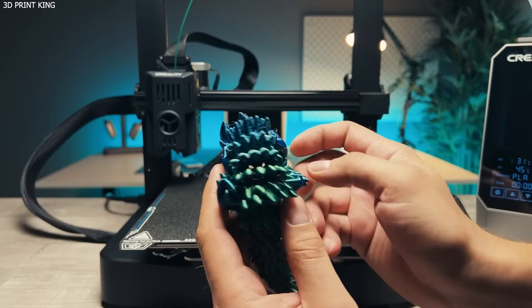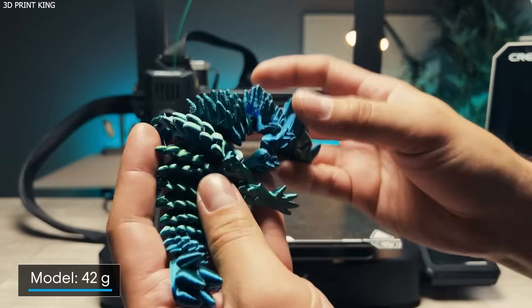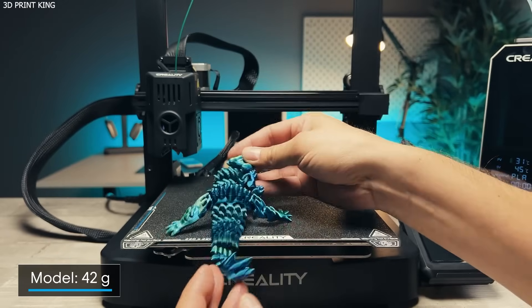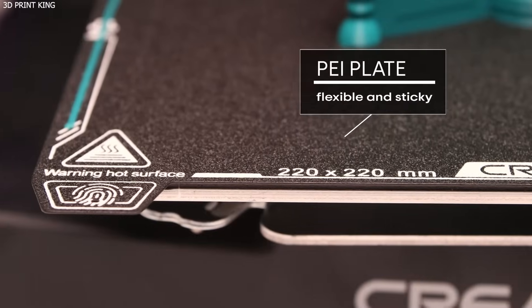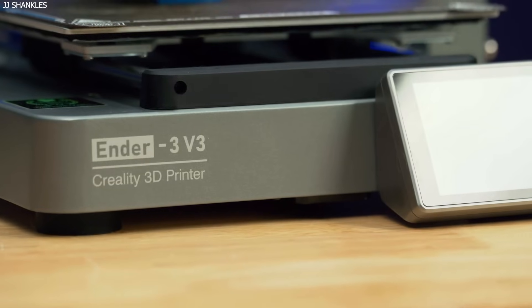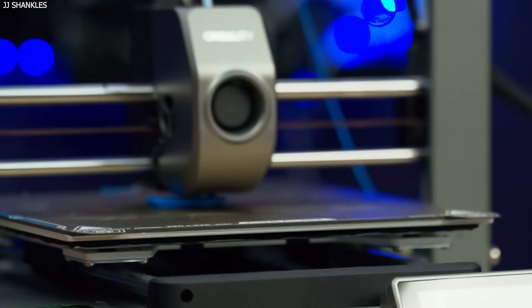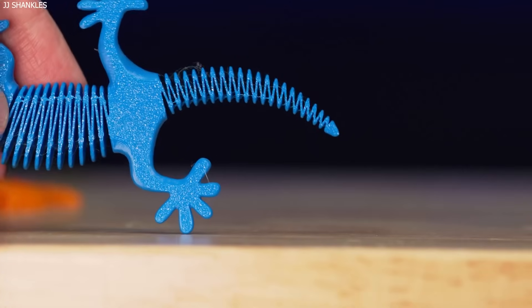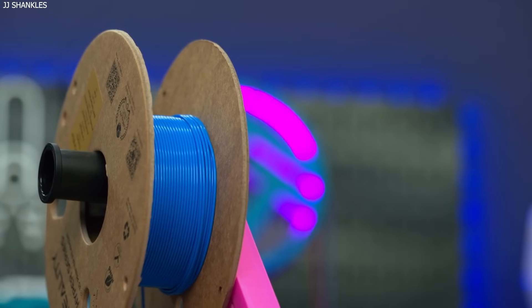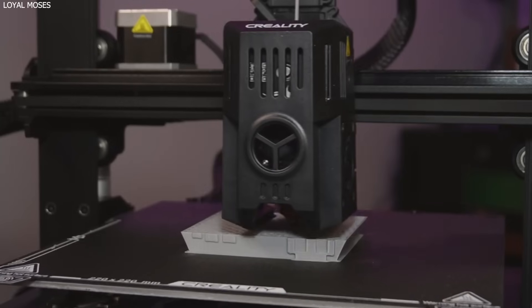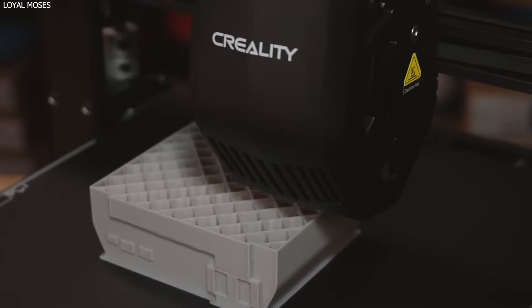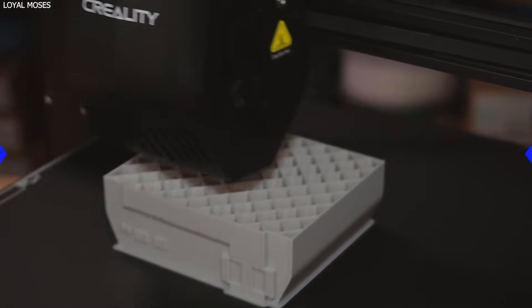Additionally, the Direct Drive Extruder provides better filament control, especially when printing with flexible materials like TPU. The sturdy all-metal frame improves stability, reducing vibrations and enhancing overall print quality. Furthermore, the silent motherboard ensures quiet operation, making it suitable for home use. If you're a hobbyist or beginner looking for a cost-effective 3D printer with premium features, the Creality Ender 3 V3 KE is a fantastic choice.